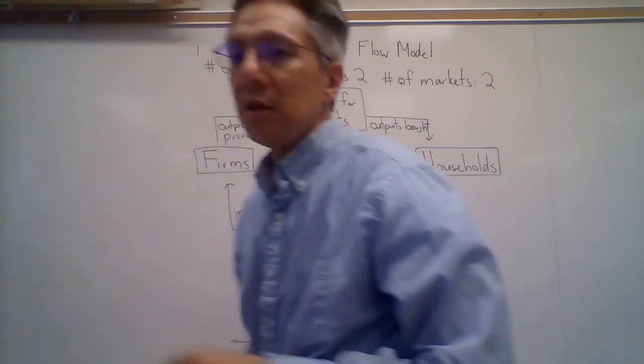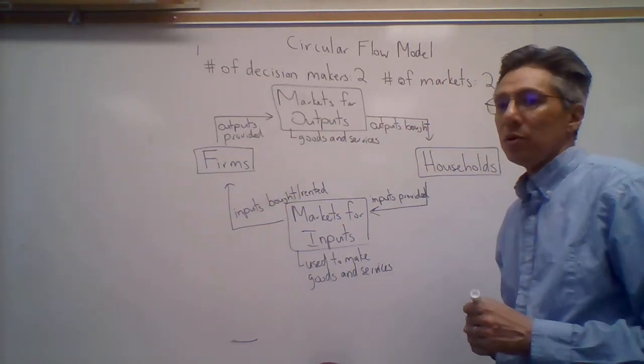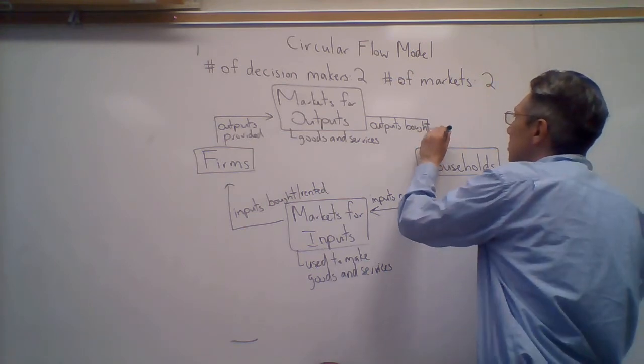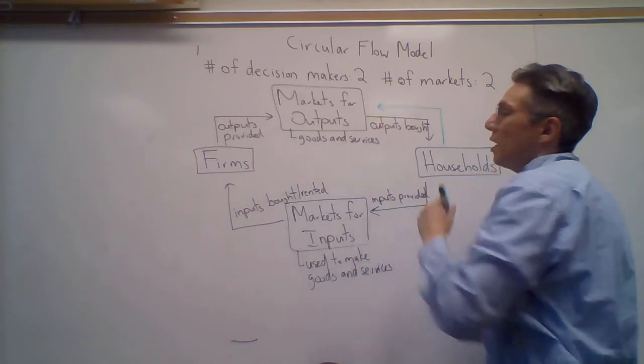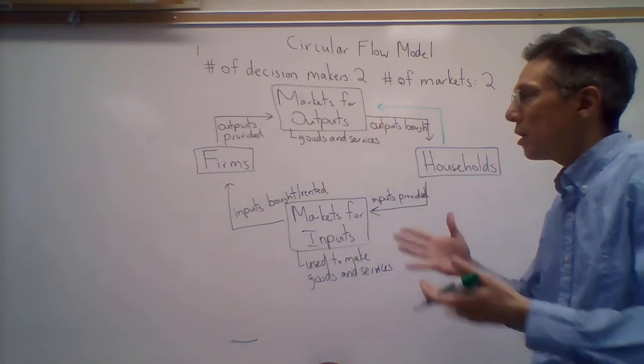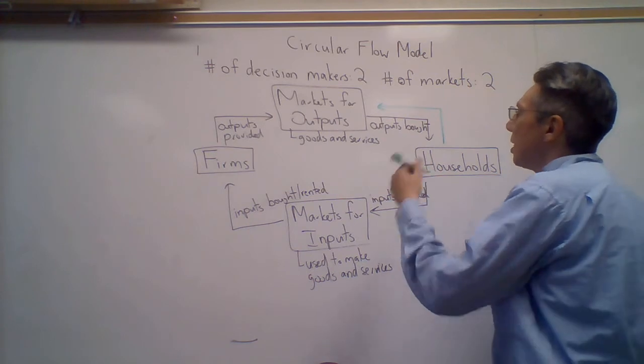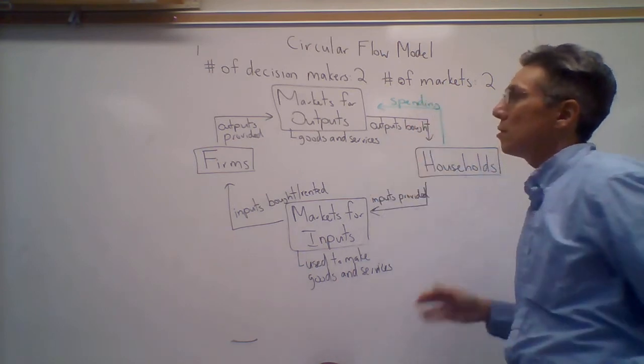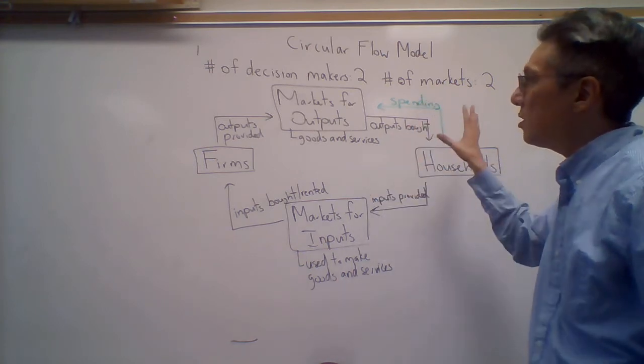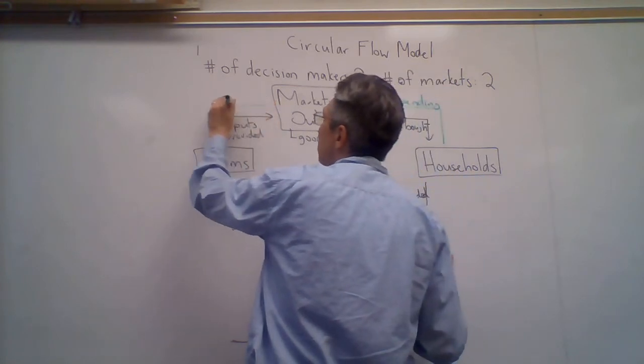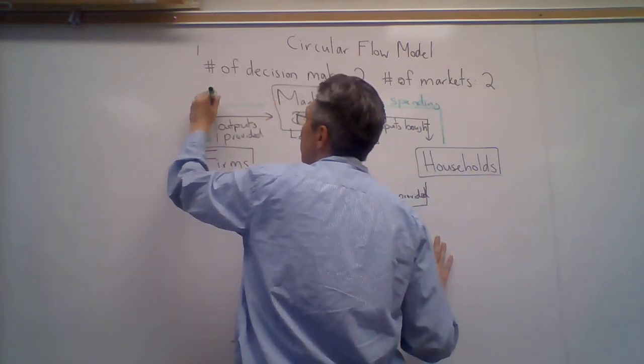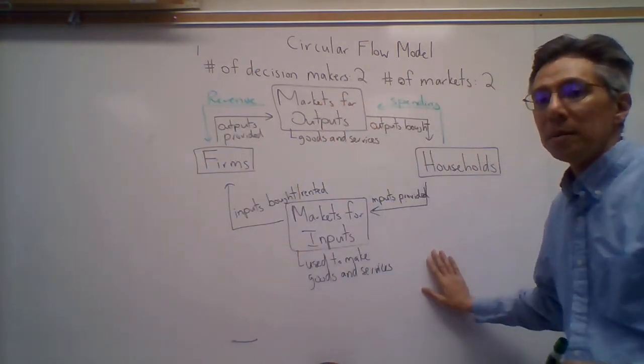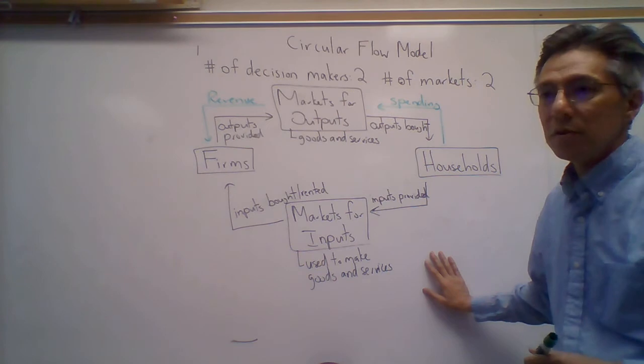One other aspect of this model is the flow of money. Starting with households, how do they get this output? They basically buy. This is spending on the part of the households. What does this spending become for the firms? It becomes their revenue, the money coming into the firm.